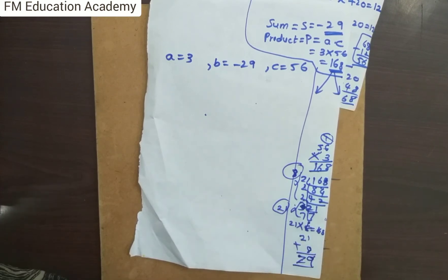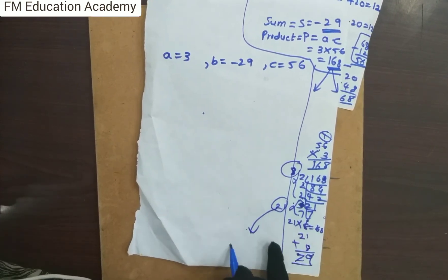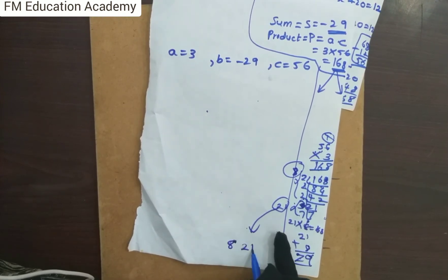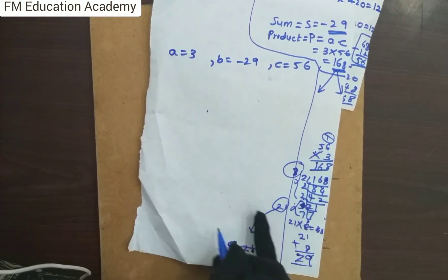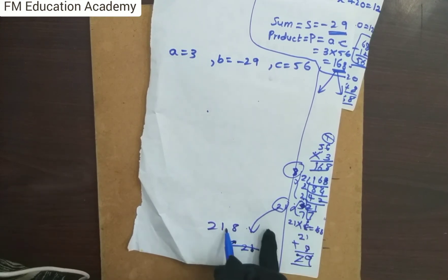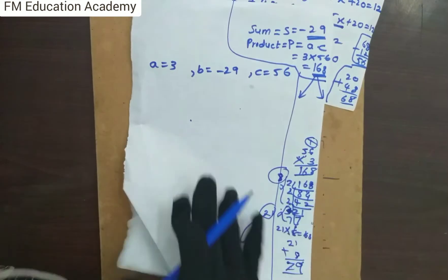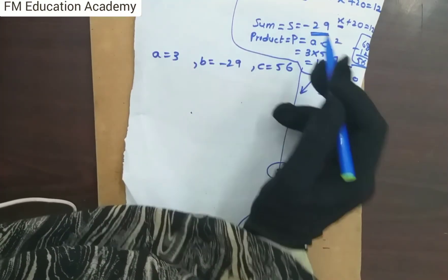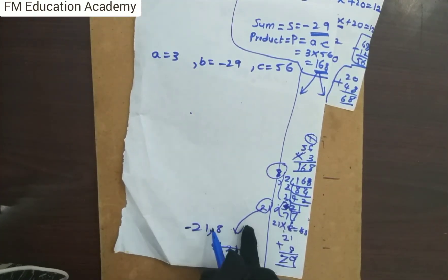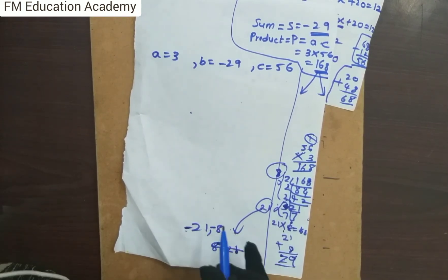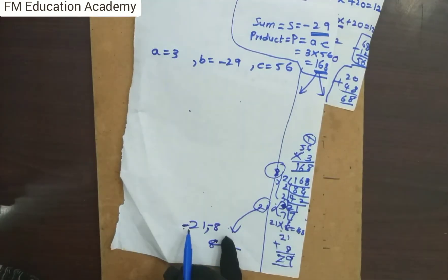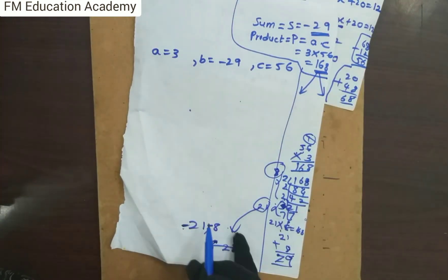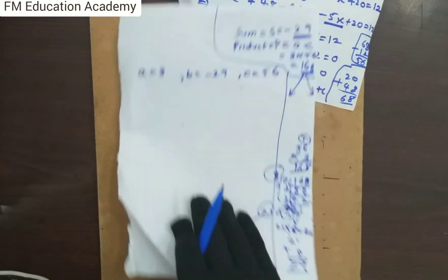Since the sum is −29 (negative) and the product is positive (+168), both factors must be negative. So I take the factors as −21 and −8, because −21 + (−8) = −29 and (−21) × (−8) = +168. Both conditions are satisfied.